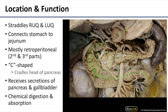The major duodenal papilla receives the hepatopancreatic ampulla. That hepatopancreatic ampulla is a dilation of the tubes that drain the liver and gallbladder as well as the pancreas, so that those secretions may enter into the second part of the duodenum.